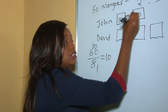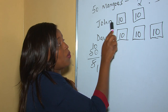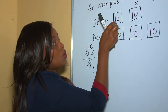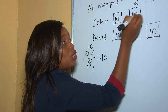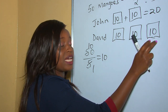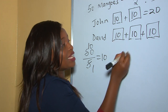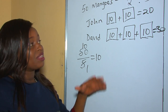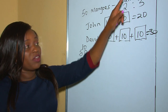John had two parts, so two baskets each with 10 mangoes, giving him 20 in total. David had three parts, three baskets each with 10 mangoes, giving him 30 in total. So John got 20 mangoes and David got 30 mangoes, and we have successfully shared using ratio.